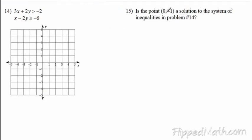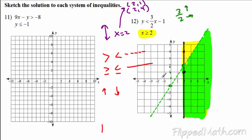Is the point (0, −1) a solution? They're asking about problem 14. Zero, negative one — it's on the dotted line. But no — remember, the dotted line is not part of the solution. Only the solid line is.